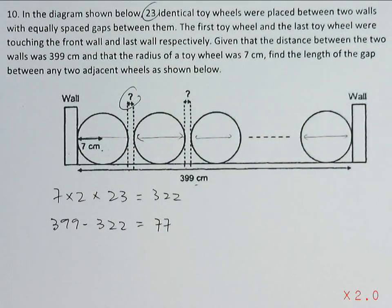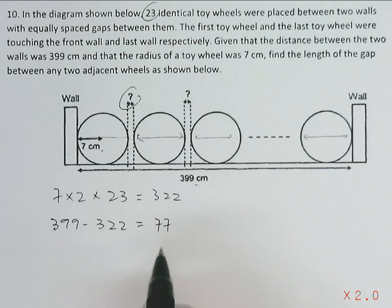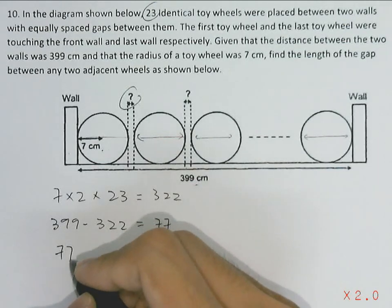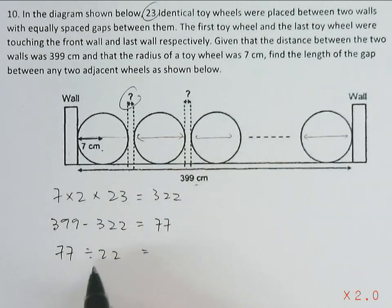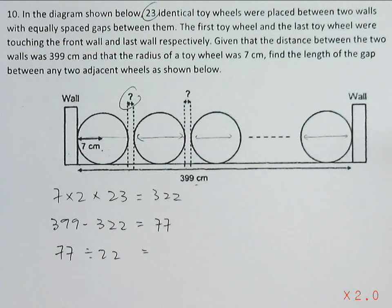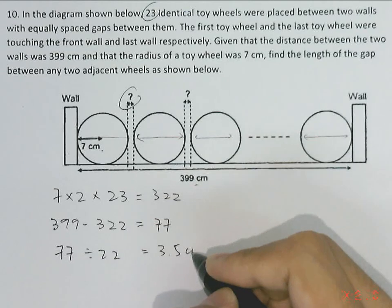So if there were 22 gaps and the total length of all the gaps is 77 cm, we can take the full length dividing by the number of gaps. 77 divided by 22 gives us our answer of 3.5 cm for the distance of each gap.